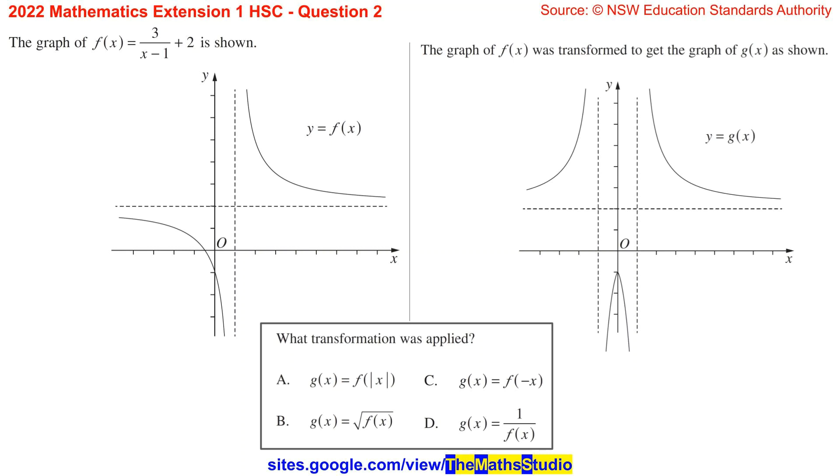Question 2. The graph of f(x) = 3/(x-1) + 2 is shown. The graph of f(x) was transformed to get the graph of g(x) as shown. What transformation was applied?